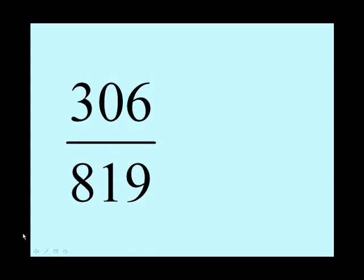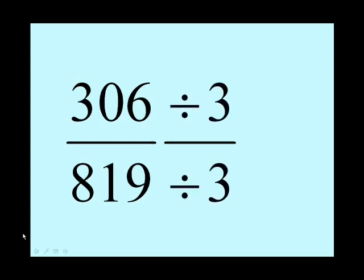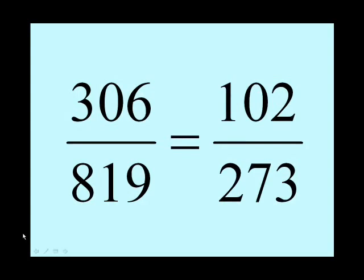Now, we can't use 2 anymore, can we? So we think about the next number that will divide in both. If you look at 819, it's 81 and then 9. So 3 will go into 81 and 3 will go into 9. And it's pretty straightforward to see that 3 will go into 306, because 3 can go into 30 and 3 goes into 6. So if you divide by 3, you end up with 102 over 273.